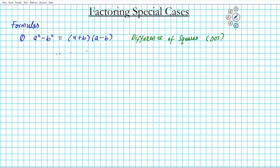The second category has two formulas. The first one is a squared plus 2ab plus b squared, and when this is factored it factors into quantity (a + b) squared. And then if you have a squared minus 2ab plus b squared, this one factors into quantity (a - b) squared. The first sign basically tells you the operation that goes between a and b — if you have plus first, you have a plus; if you have minus first, you have a minus.